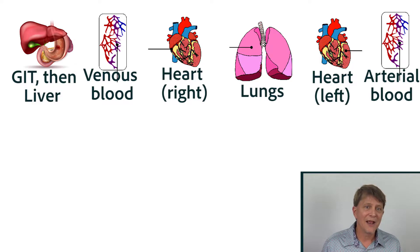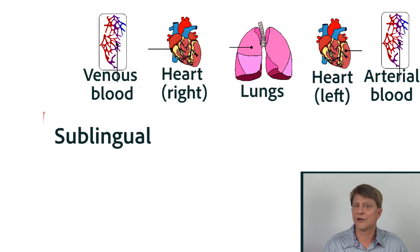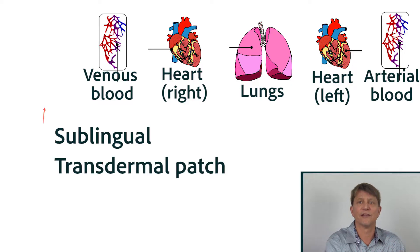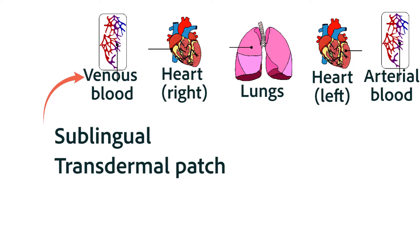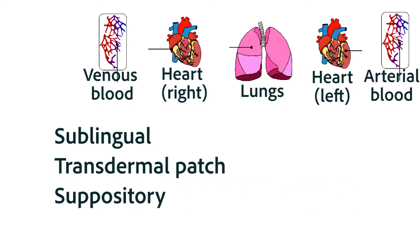Now, that's a long way. But if you administer glycerol trinitrate — sometimes called nitroglycerin for angina — sublingually or under the tongue, or by transdermal patch, or another medication by suppository into the lower portion of the rectum, all of those modes of administration will go directly into the venous system circulation.